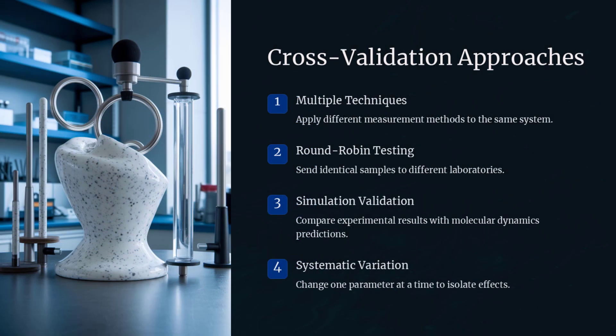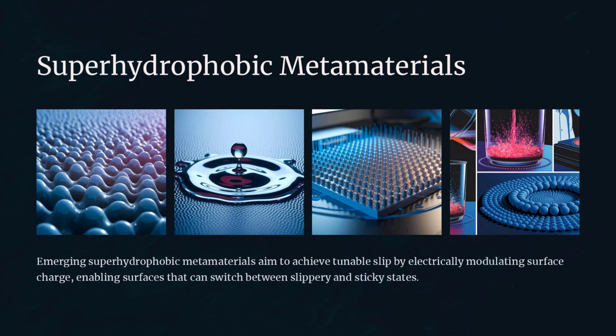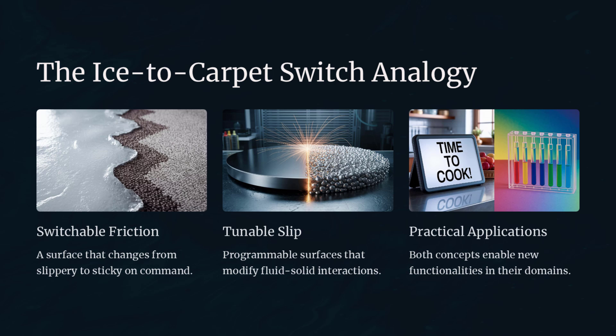Future research will integrate multi-scale simulations — from ab initio molecular dynamics to continuum CFD — to unify understanding of slip across scales. Advances in surface engineering may enable programmable slip profiles for adaptive microfluidic circuits. Exploring slip in biological systems could reveal novel mechanisms of fluid transport in cells and tissues. Ultimately, resolving the slip boundary paradox will deepen our grasp of fluid mechanics at the nanoscale and unlock new functionalities in precision fluid control. Emerging superhydrophobic metamaterials aim to achieve tunable slip by electrically modulating surface charge — like inventing a surface that can switch between ice-like slipperiness and carpet-like grip at the flick of a switch.